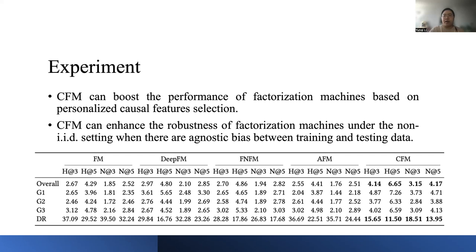Now we show our experimental results. This is a table of the recommendation performance of our CFM model and baselines on the RentTheRunway dataset. From this table, we can see that CFM can boost the performance of factorization machines based on the personalized causal feature selection. CFM can also enhance the robustness of factorization machines under the non-IID setting, where there are agnostic bias between training and the testing data.